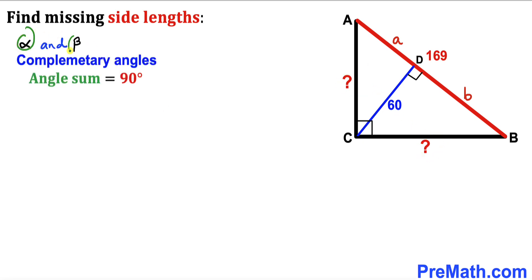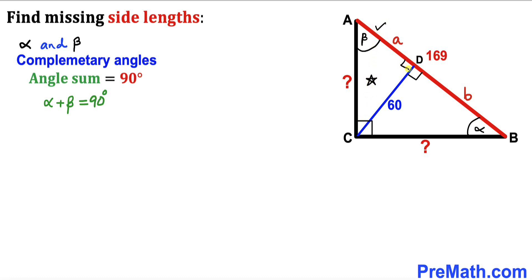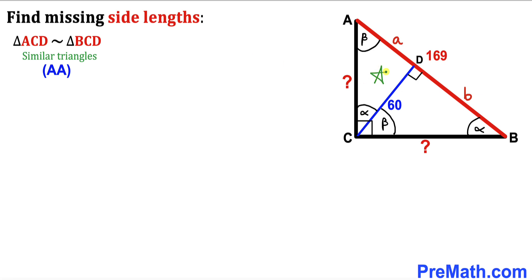Let's assume that alpha and beta are our two complementary angles — in other words, the sum of these two angles must be equal to 90 degrees. This angle is alpha and this angle is 90 degrees, so this angle has got to be beta. In triangle ACD, this angle is beta and this angle is 90 degrees, so this angle is alpha. Therefore, we conclude that right triangle ACD is similar to right triangle BCD according to the angle-angle similarity theorem.